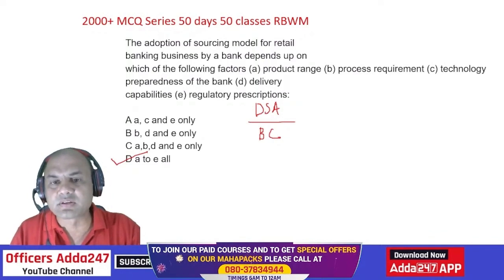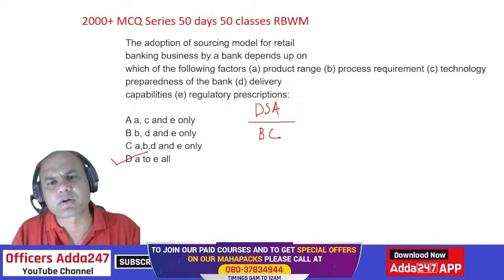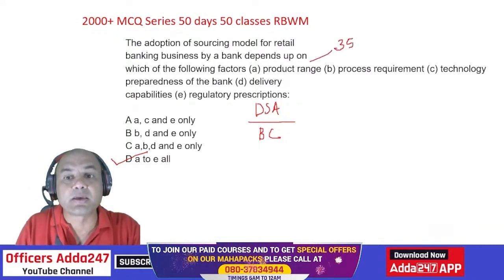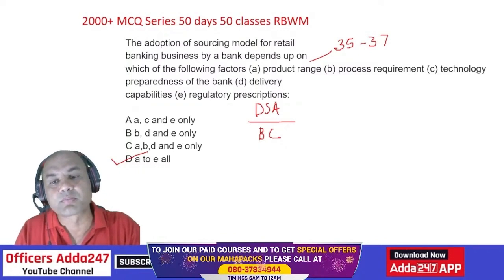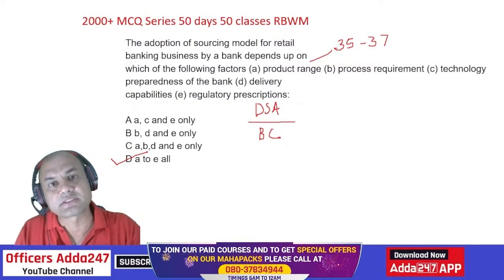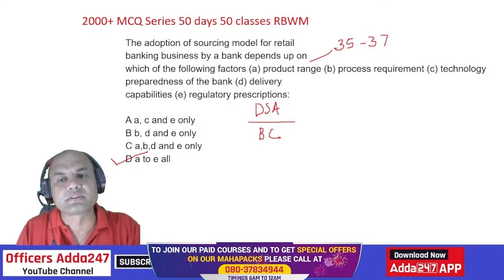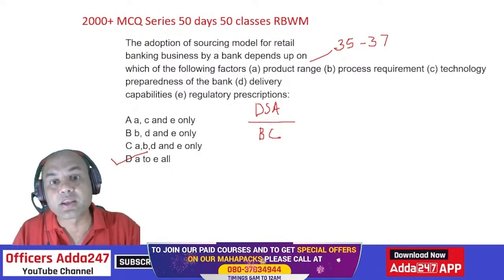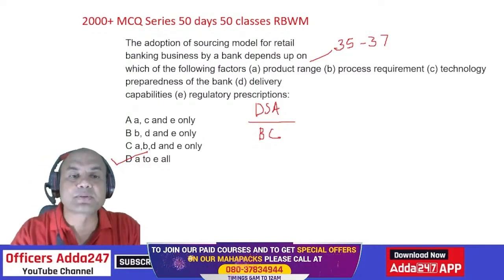Product range: if I have a large number of products — banking has around 35 to 37 products total — not all banks have everything. Process requirements vary by bank. Technology and process are roughly correlated. Delivery capabilities mean how fast and responsive employees are to customers. Regulatory prescriptions mean what RBI mandates. The answer is definitely A to E all.